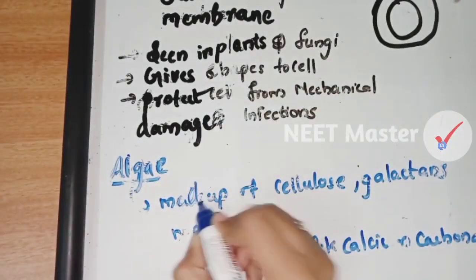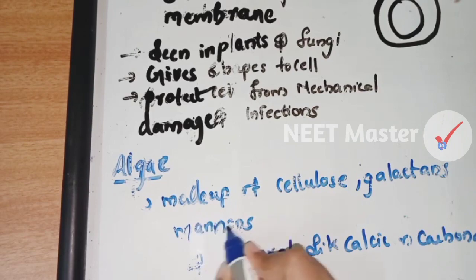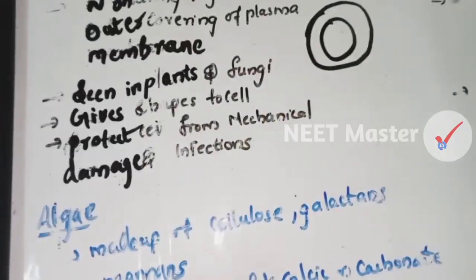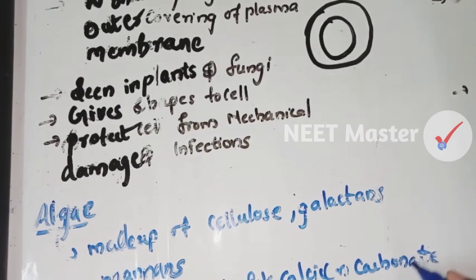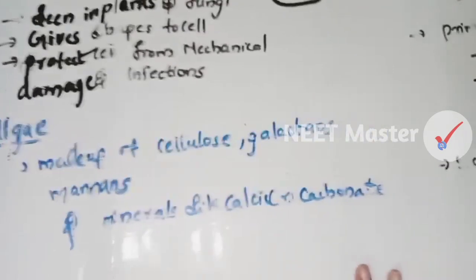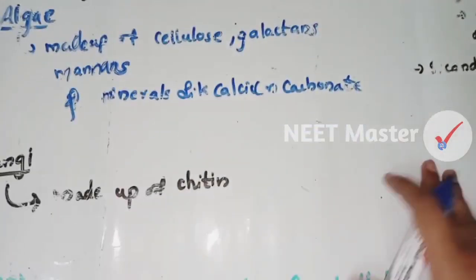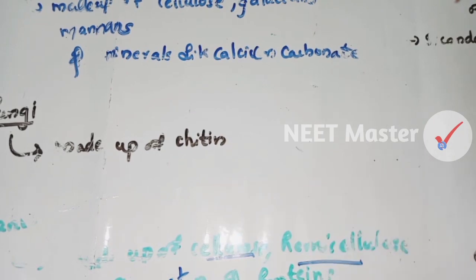The cell wall is made up of cellulose, galactans, and manans, and minerals like calcium carbonate in algae. In fungi, the cell wall is made up of chitin.